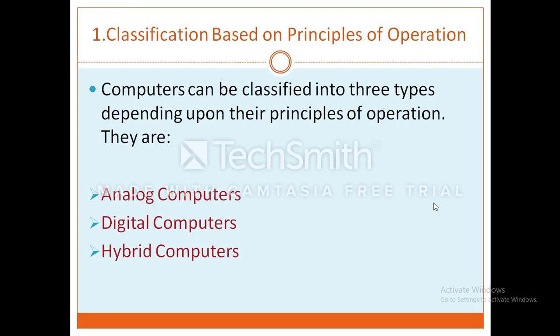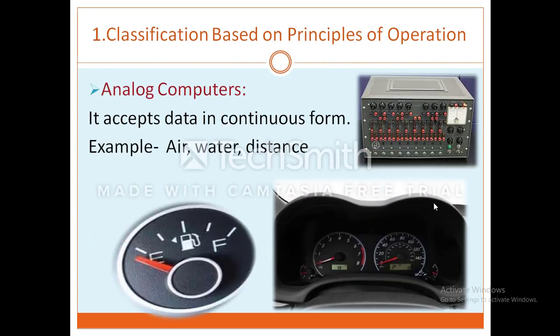Computers can be classified into three types depending upon their principles of operations. They are: analog computers, digital computers, and hybrid computers. Let us discuss them one by one. First one is analog computers. Everything we see and hear is changing continuously — this is analog data. Analog computers are computing devices that process data which is continuous and varies regularly, meaning they accept data in continuous form, for example: air, water, distance, temperature.